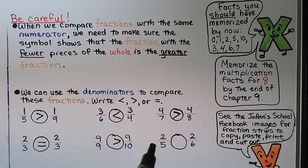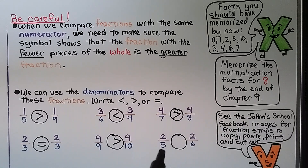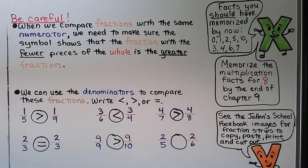Two-fifths and two-sixths both have the same numerator. Five is the lower denominator, so that's the larger fraction. Two-fifths is greater than two-sixths.